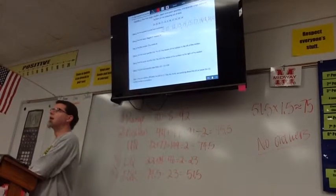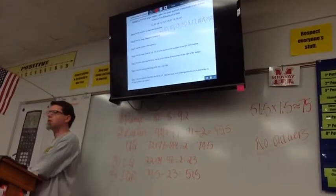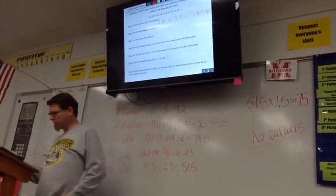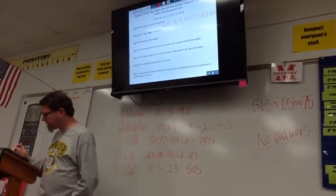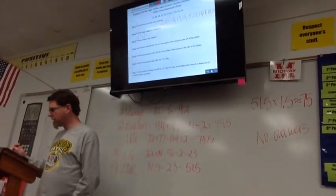Step two says to find the range. Could somebody raise your hand and tell us how to find the range? Chloe? Twenty-one minus two. Twenty-one minus two equals? Nineteen. Nineteen.